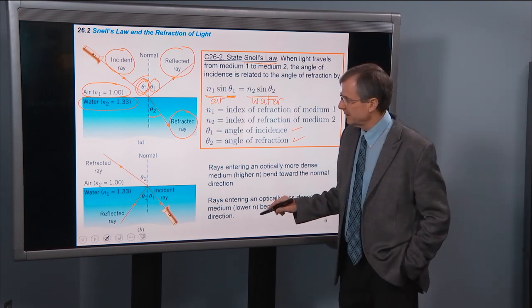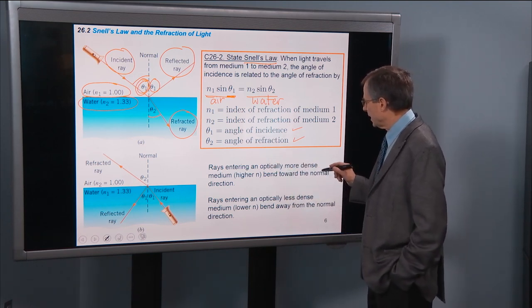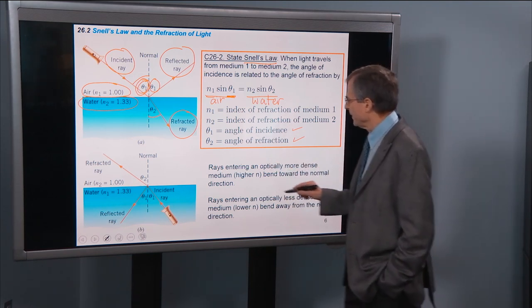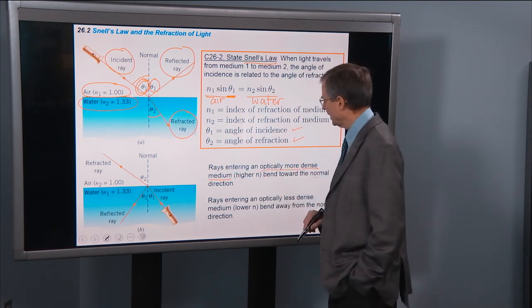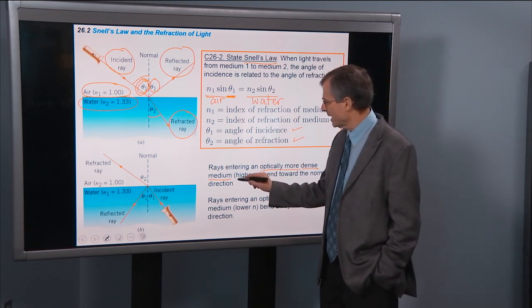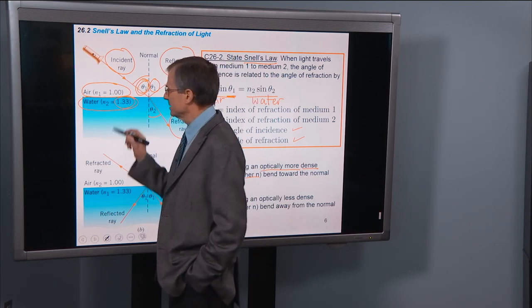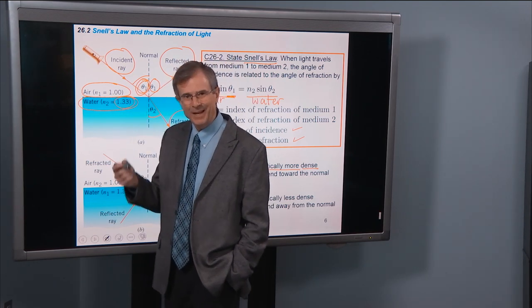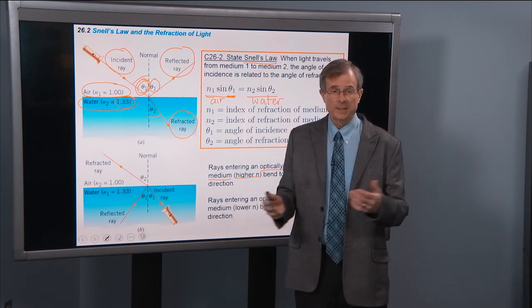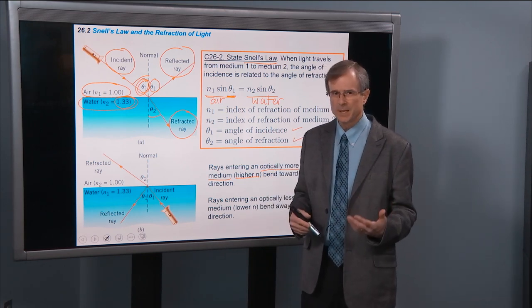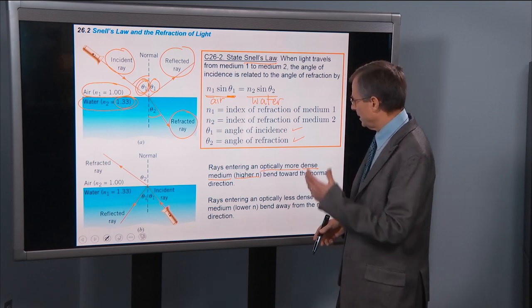So one thing to notice about this, according to this diagram, you can see this: rays entering an optically more dense medium. We'll use the term optically more dense. Optically dense medium, that means a higher index of refraction. So water would be optically more dense than air because it has a higher index of refraction. It roughly correlates with just regular old density, mass density, because water is more dense than air. But it's not a strict correlation. But that's the word that we use to describe a higher N material.